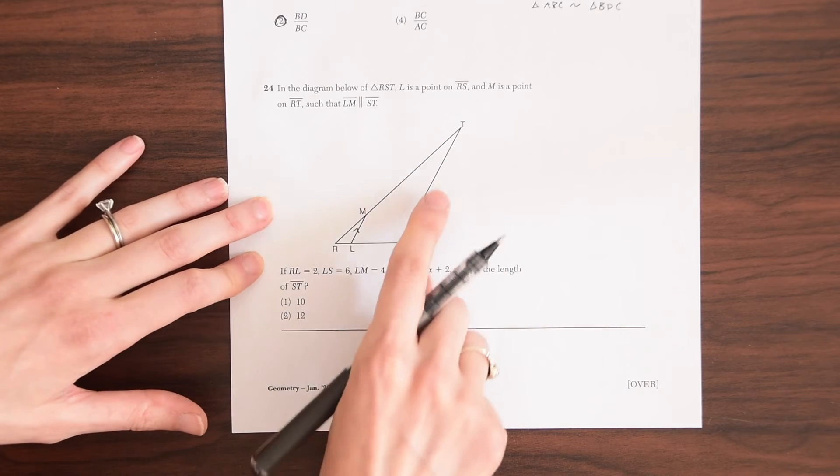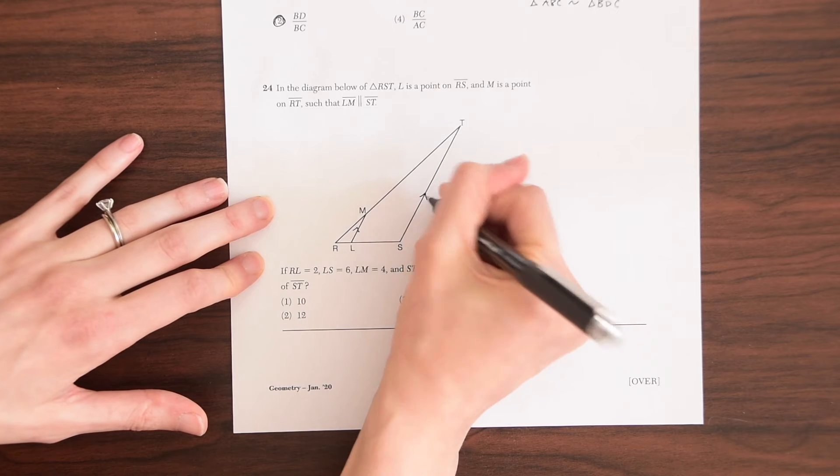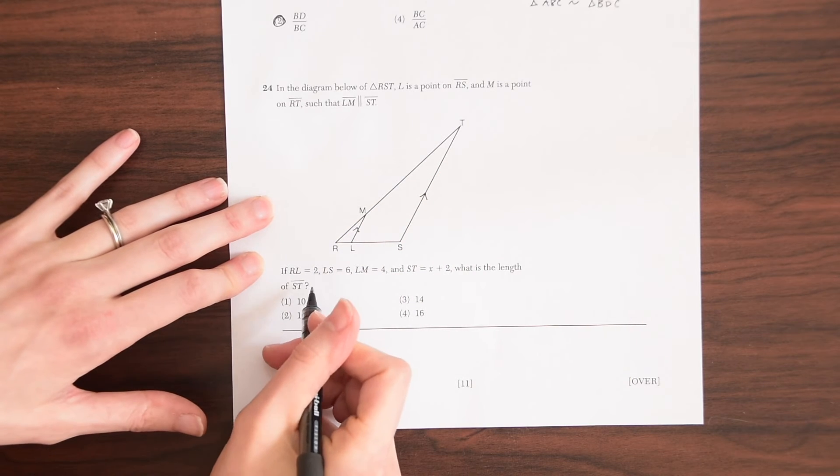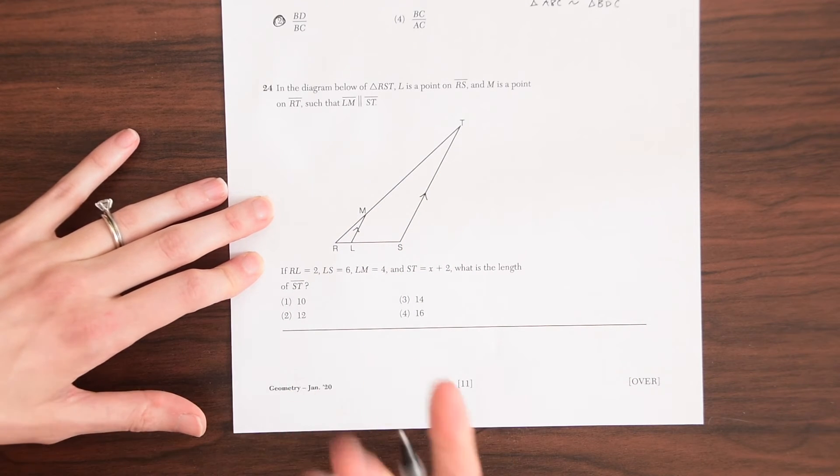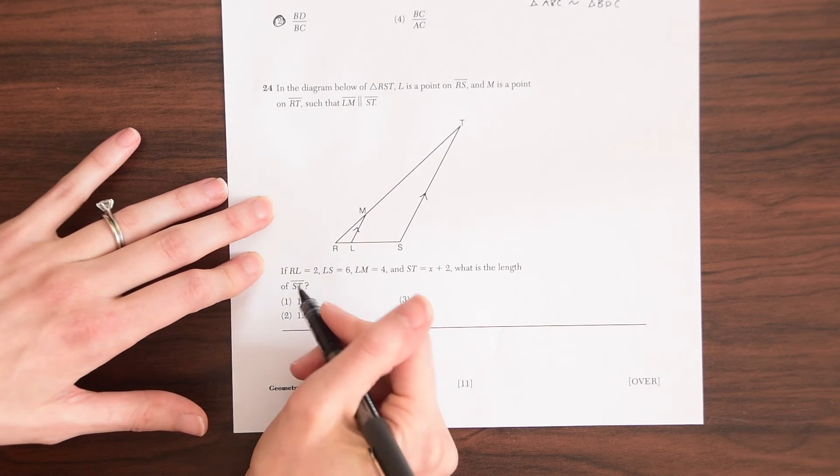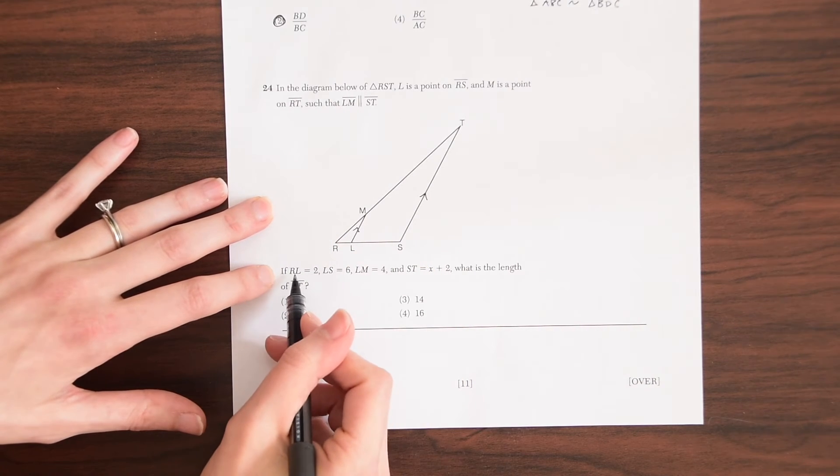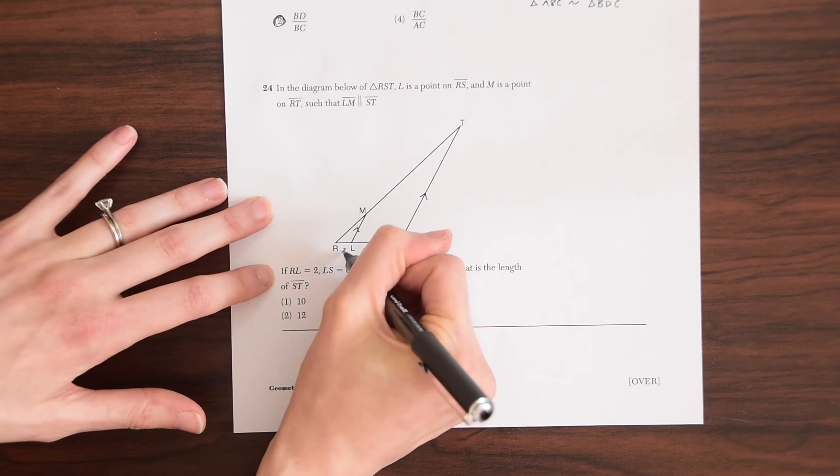So LM, this line right here is parallel to ST. So we're just filling in all the information they're giving us. We mark that these two lines are parallel and now they're going to give us some values.